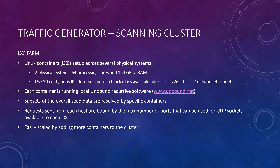The scanning cluster is a series of Linux containers set up across several physical systems. For this paper they used two physical systems, each with 64 processing cores and 164 gigabytes of RAM. They used 30 contiguous IP addresses out of a block of 63 on a class C network split into four subnets. Each container runs a software called Unbound, which is a recursive, open-source software. Each container has a specific job and a specific subset of data it's responsible for. The requests are bound by the max number of ports for UDP sockets, and it's easily scaled by adding more containers.